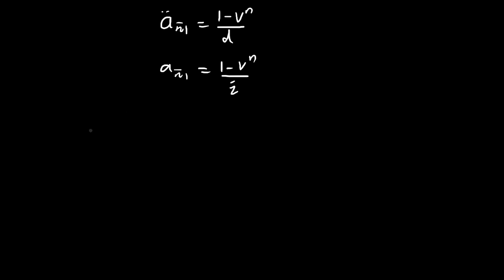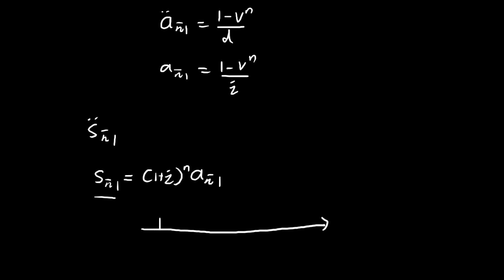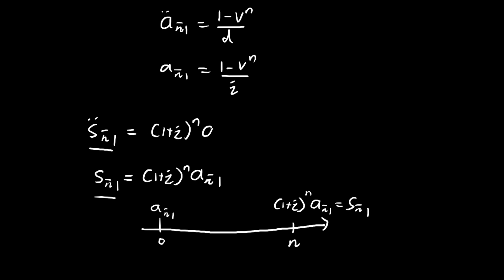The next logical question is to find the accumulated value. Recall from the previous video that the accumulated value of an annuity immediate equals (1 plus i) to the power of n times the present value of the annuity. This same relationship holds: since ä_n is the value of all those payments at time 0, to evaluate them at time n you just compound by (1 plus i) to the power of n. So by the same logic, the accumulated value of an annuity due equals (1 plus i) to the power of n times ä_n.